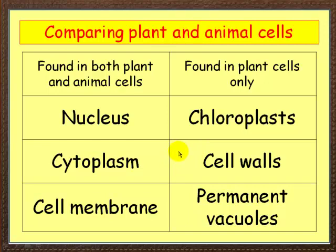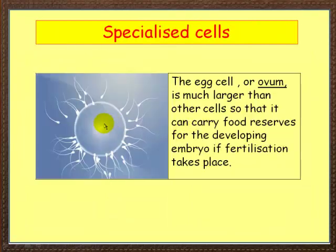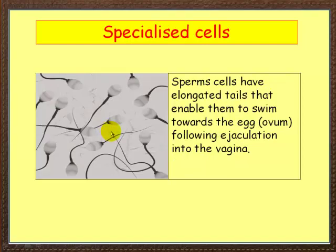Now let's look at more specialized cells. This is an egg cell, or ovum, surrounded by lots of sperm. It's much larger than other cells because it carries food reserves, and a developing embryo forms here if fertilization takes place. The sperm themselves have elongated tails which help them to swim — they can swim to the egg following ejaculation into the vagina.